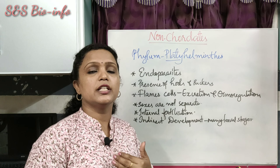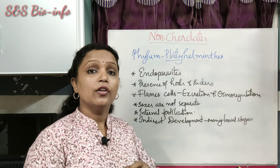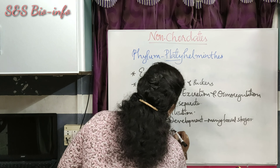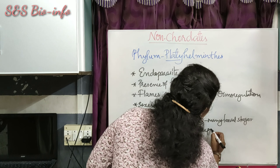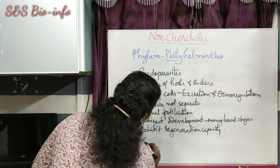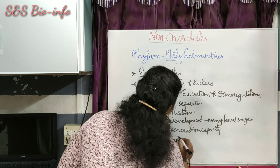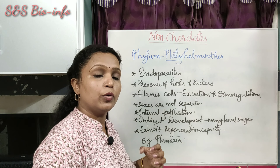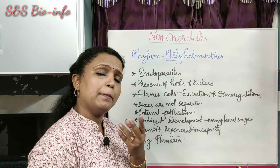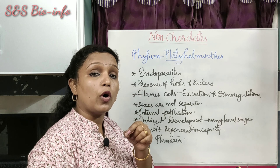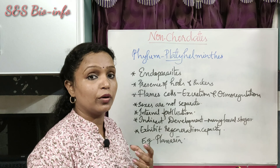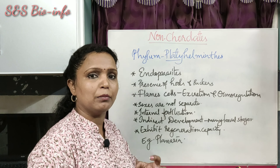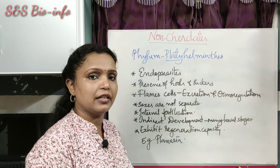Some members of this phylum possess high regeneration capacity — for example, Planaria. Regeneration is one of the asexual methods of reproduction seen in lower animals. When the body is divided into many fragments, each small piece gives rise to a complete organism with the whole organ system. This means each cell is totipotent in nature, and such ability is called regeneration capacity.